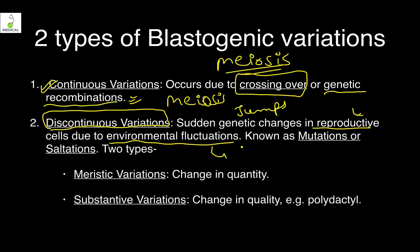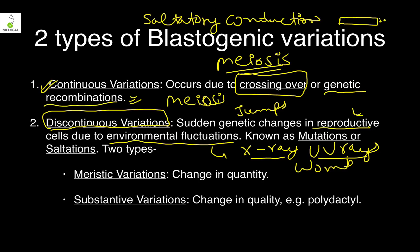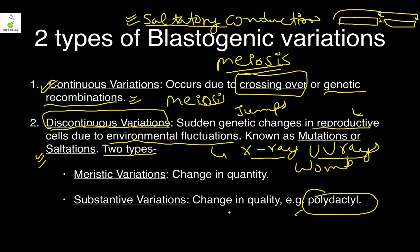Discontinuous variation involves sudden jumps in genes in the reproductive cells due to environmental fluctuations. For example, if your mother is exposed to X-rays or UV rays while you are in the womb, you can have mutations or saltations. Saltatory conduction is seen in nerves with myelin sheath where the nerve impulse jumps across myelin gaps — similarly, saltation means a sudden jump, also called mutation.